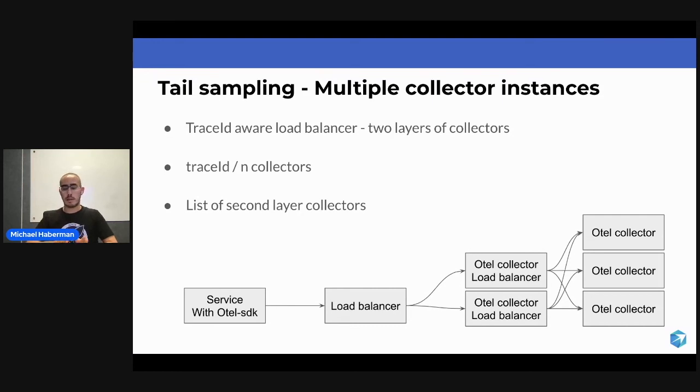Then we have two layers. Layer number one acts as a load balancer that is aware of the trace ID. The only thing that it's going to do is receive spans, decide where to send them to, and send them there. And then the second layer would be the OpenTelemetry collector that is going to do whatever it used to do, but now it's going to get the whole trace.